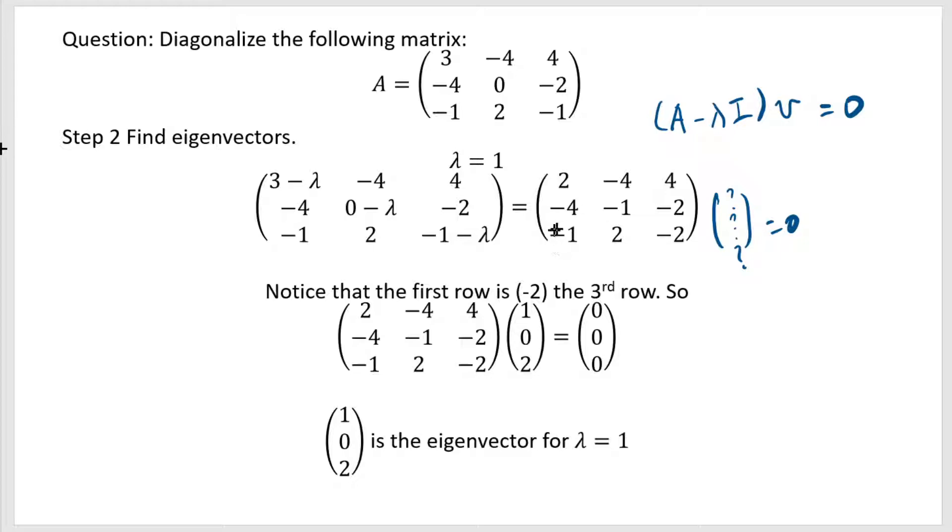See, if you multiply this third one times 2, it's exactly the same as the negative of this one, right? So you can see that if you multiply 1, 0, 2, this gives you 0, 0, 0. So we find that (1, 0, 2) is an eigenvector for lambda equal to 1.